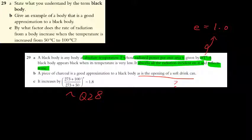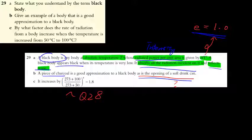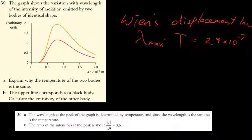For question 29: the power radiated per unit area (intensity) equals σT⁴ for a perfect blackbody where e = 1.0. Part a: a perfect blackbody appears black because it absorbs all radiation and reflects none. Part c is similar to question 28 but be careful — temperature is given in degrees Celsius, so add 273 to convert to Kelvin before calculating.